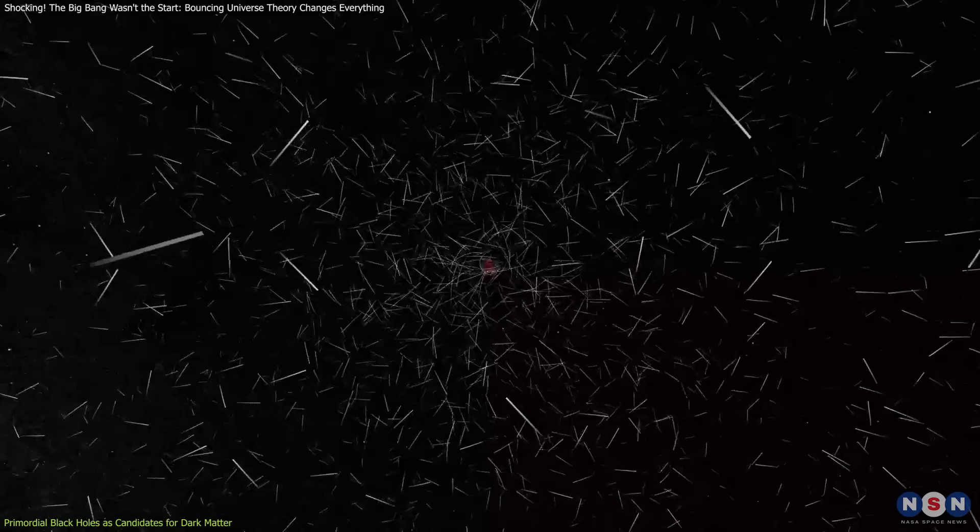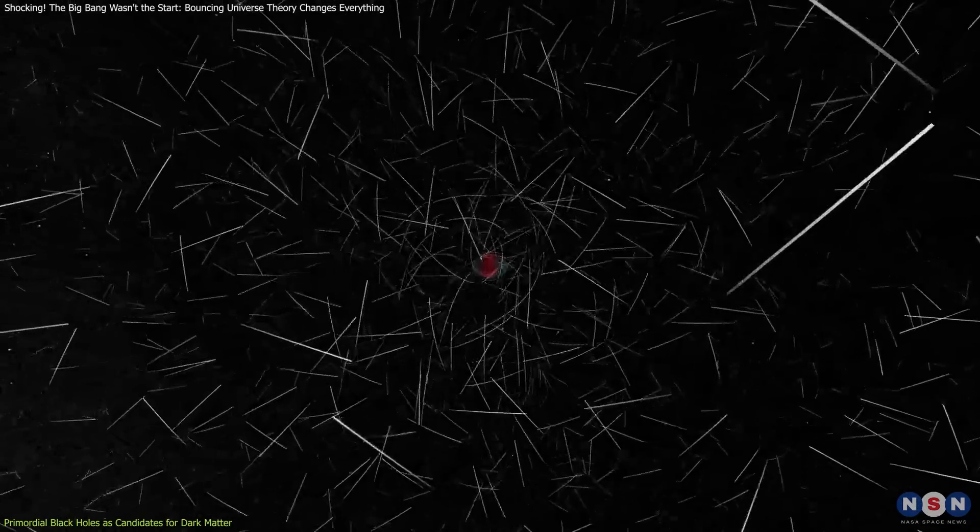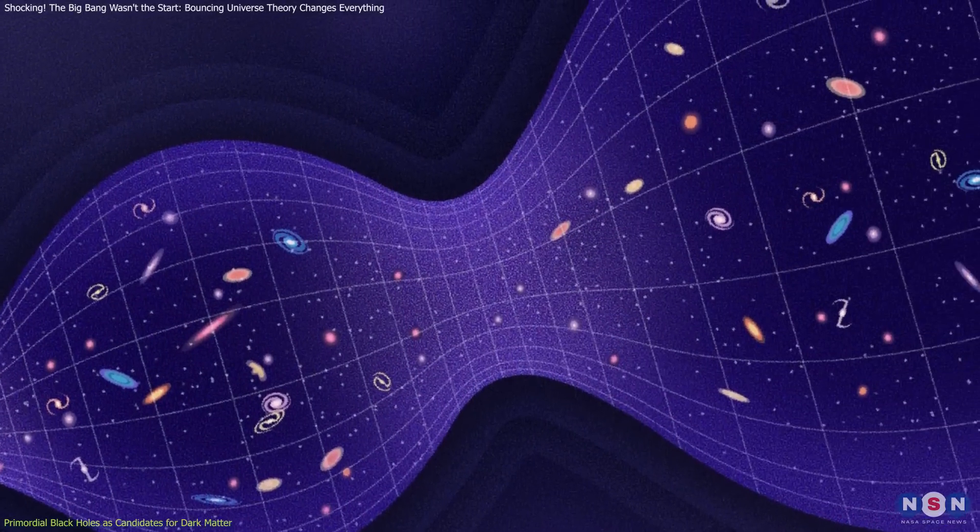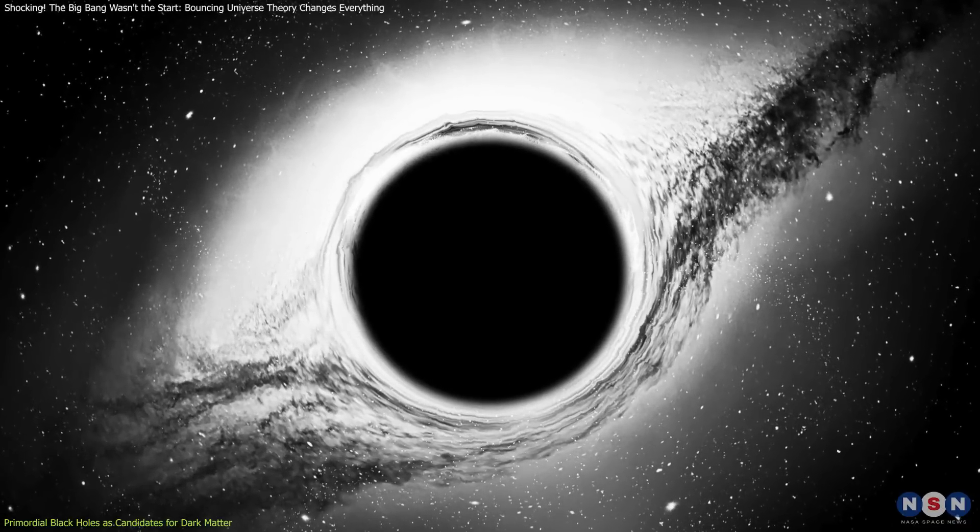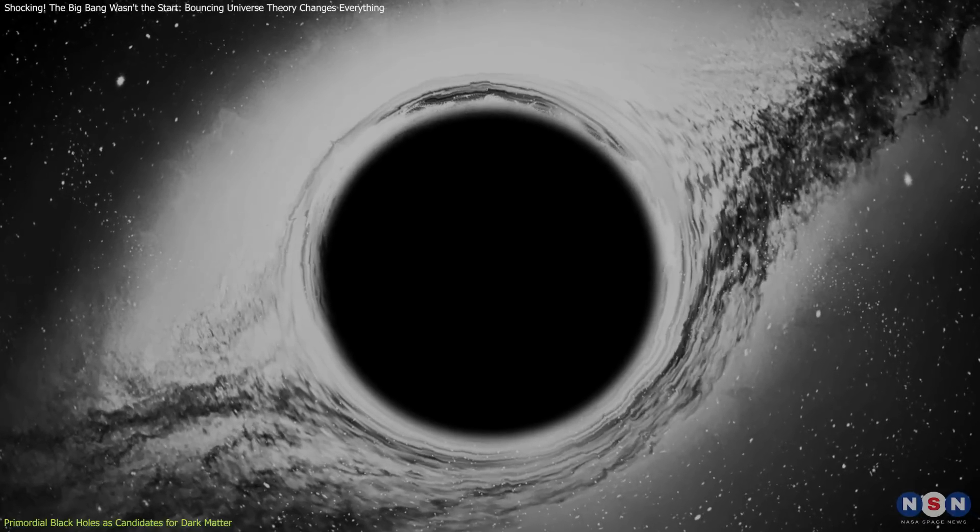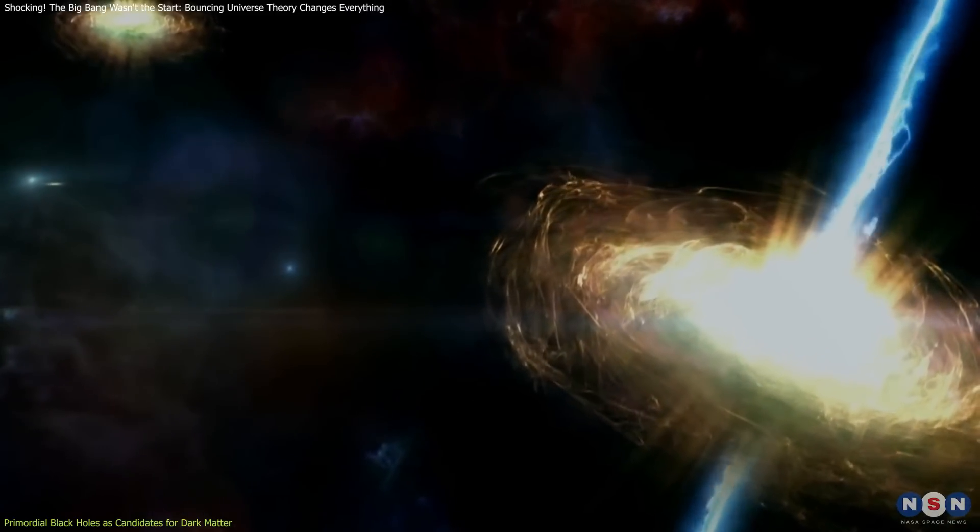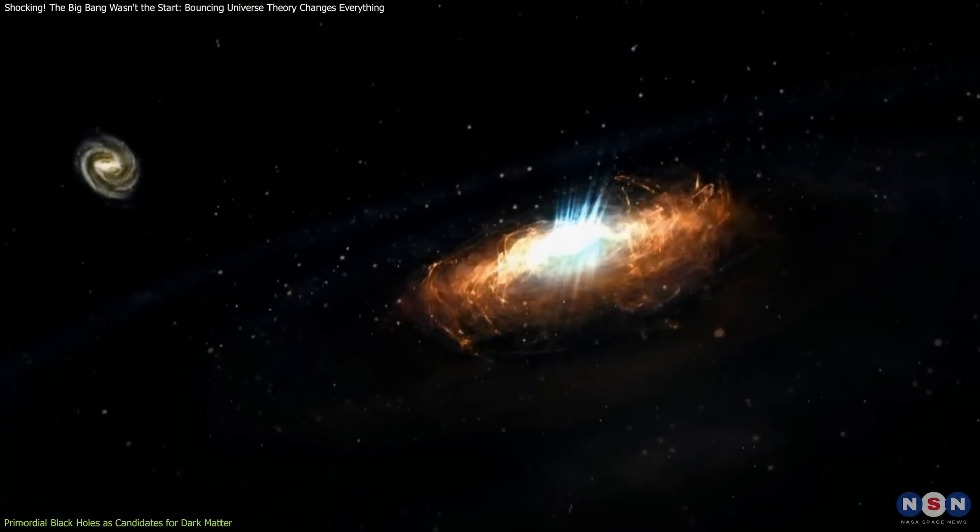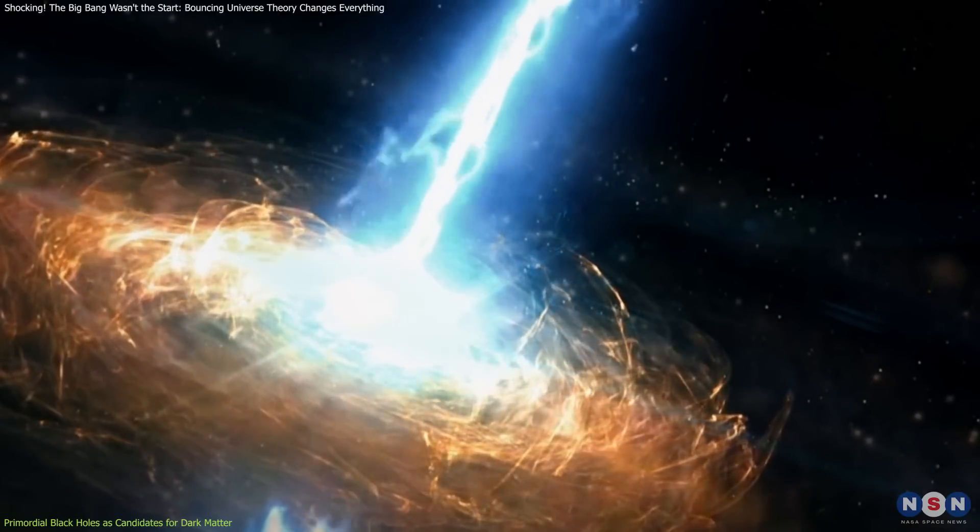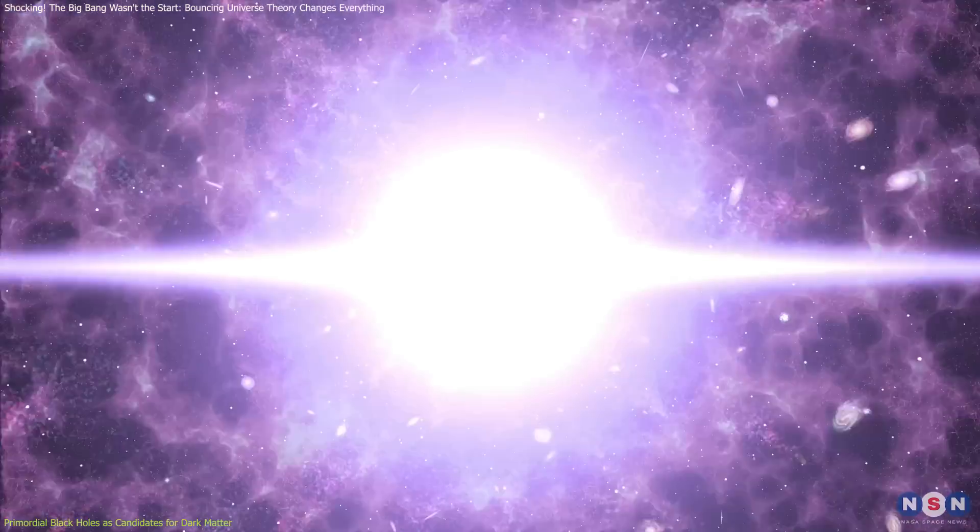Traditionally, dark matter was thought to be composed of exotic particles like WIMPs, weakly interacting massive particles. However, the bouncing cosmology model provides a compelling alternative. Dark matter could be made up of primordial black holes formed during a previous contraction phase of the universe. During this phase, the universe would have been subject to extreme conditions of density and temperature. Under such circumstances, small fluctuations in density could lead to the formation of primordial black holes almost immediately after the bounce, when the universe transitioned from contraction to expansion.